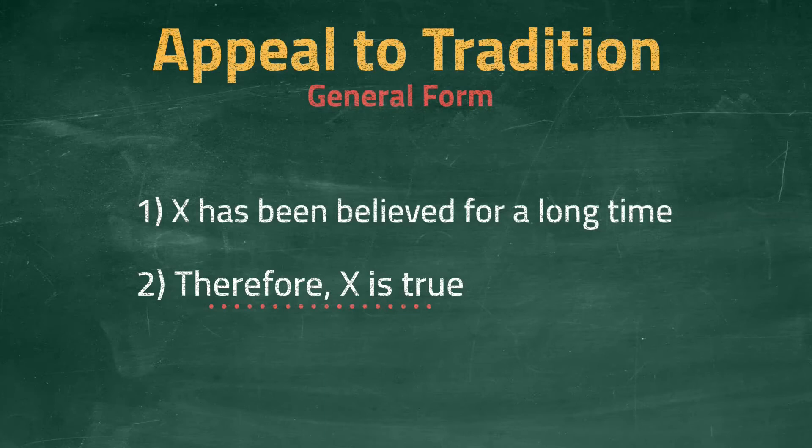But of course, it is still fallacious. The fallacy can also be combined with the appeal to authority, in which case it might become: this authority says X is true, and people have believed in this authority for so long, so X must be true. Reinforcing an authority with tradition might appear to make the argument stronger, but it is still fallacious.